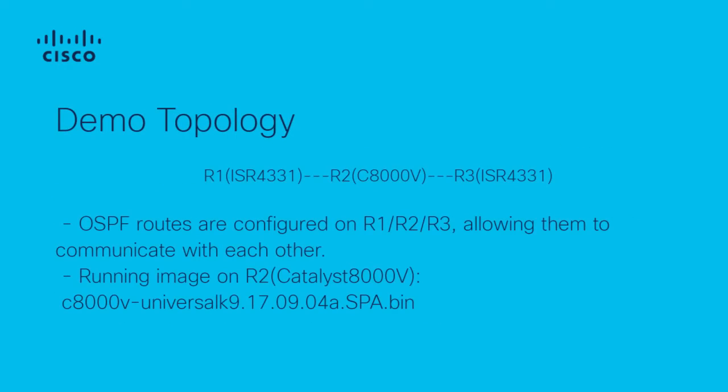This is the demo test topology. There are three routers. OSPF is configured on R1, R2, and R3, allowing them to communicate with each other. We will configure Packet Trace on Gigabit Ethernet 1 for both in and out directions to see what kind of packets we can capture.